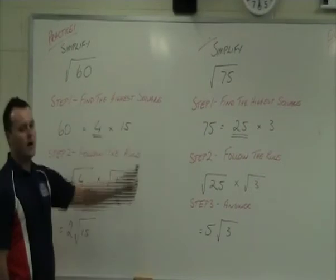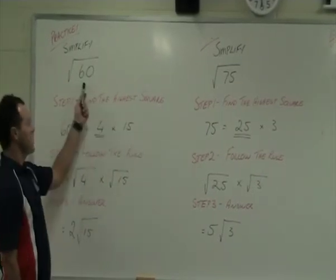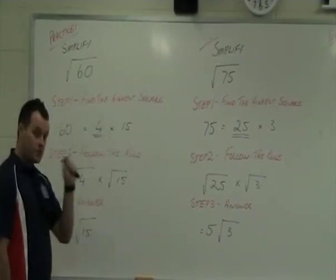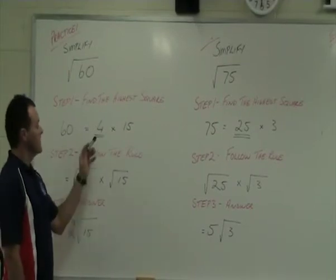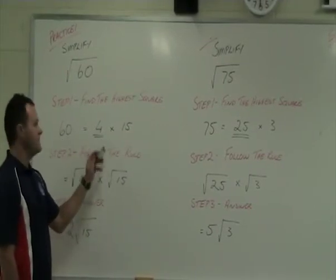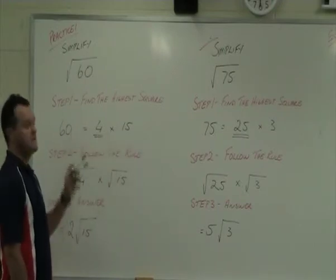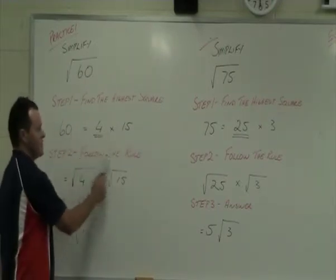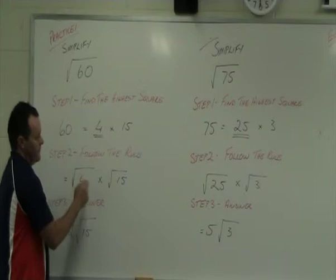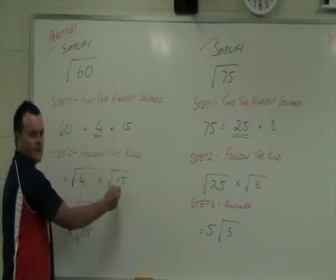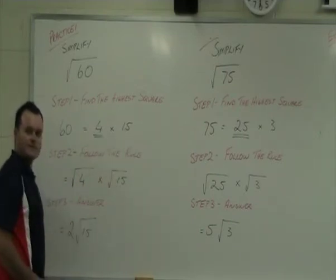All right, so step one is find the highest square. So you would have found out that the highest square number, because you wrote them down, the highest square number that goes into 60 is 4. Now 4 times 15 gives us 60. Step number 2, we're following the rule. So root 4 times root 15. And step 3 is to give us that answer.